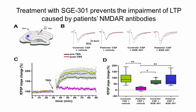Acute brain slices from mice infused with patient or control CSF and treated with SAGE 301 or a control drug were used to record field excitatory postsynaptic potentials in the CA1 region of the hippocampus. Animals infused with patient CSF showed a significant reduction of long-term potentiation compared with animals treated with control CSF, shown here in light green. However, when animals received patient CSF but were also treated subcutaneously with SAGE 301, these effects were prevented, as shown here in blue.